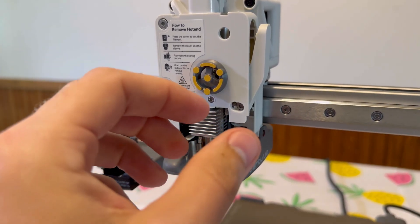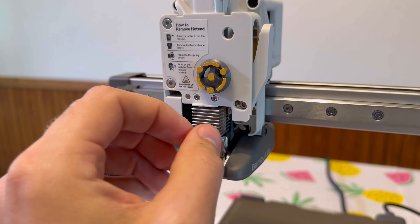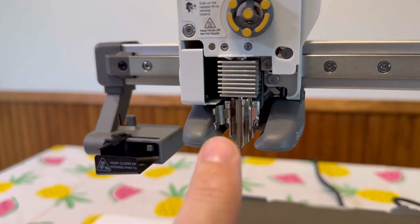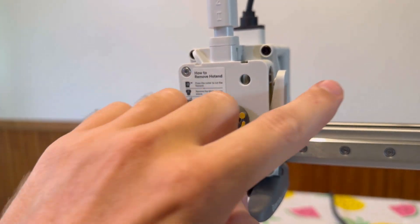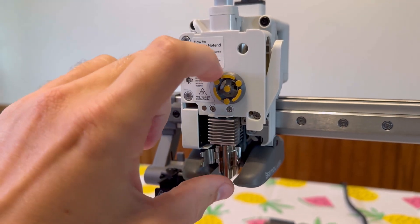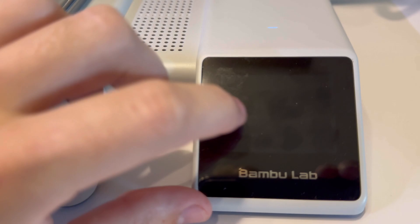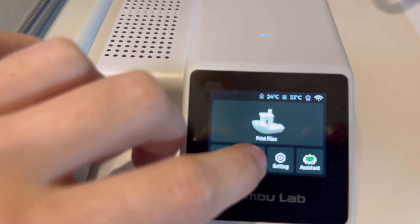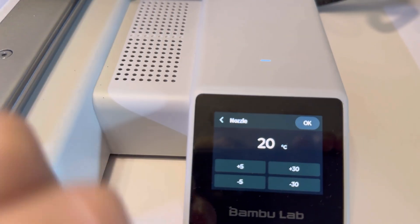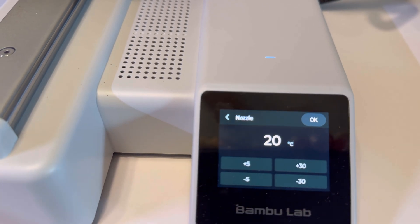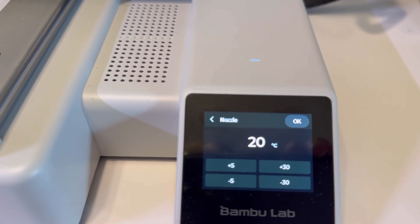If you're having issues removing the nozzle and it just won't move, what you may have to do is heat up the nozzle because that piece of filament, when it cuts it, might have a piece stuck in there. So what sometimes helps is heating the nozzle. Go over to your display and click on control and then click on nozzle and heat that up to about 100 degrees Celsius or 200 degrees Fahrenheit.